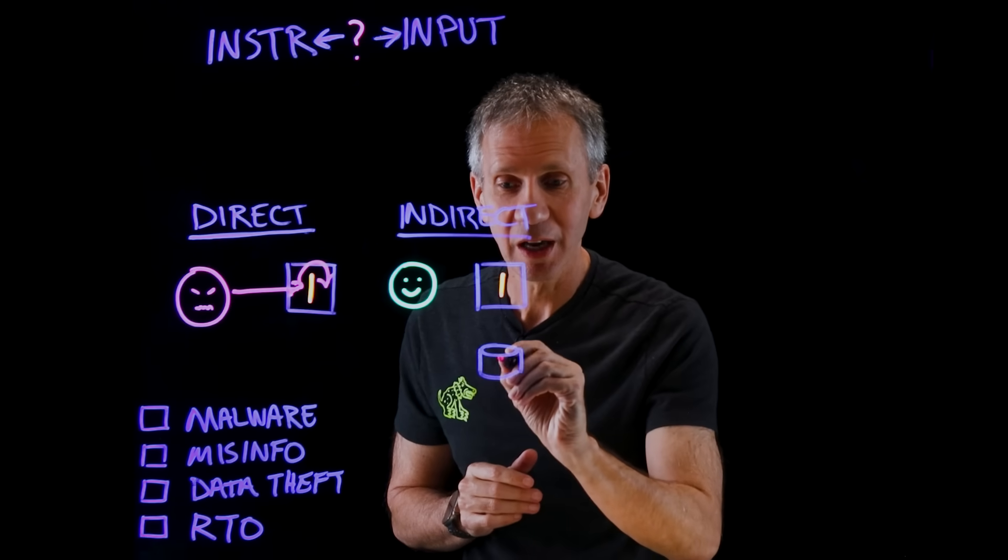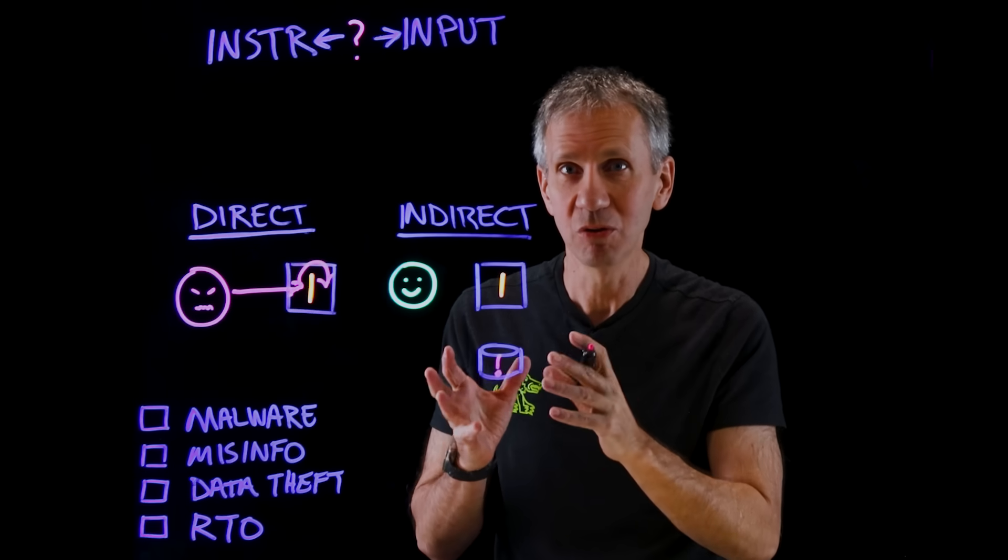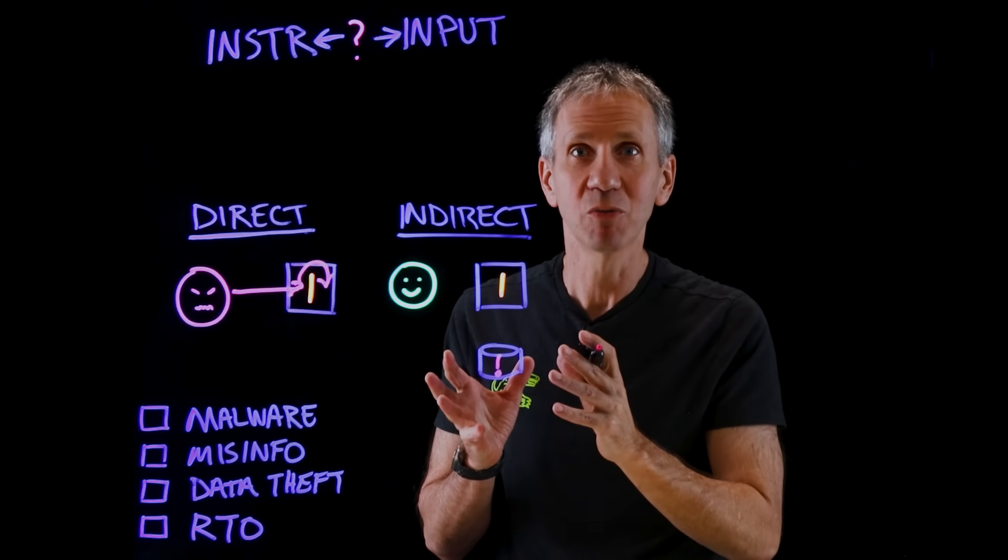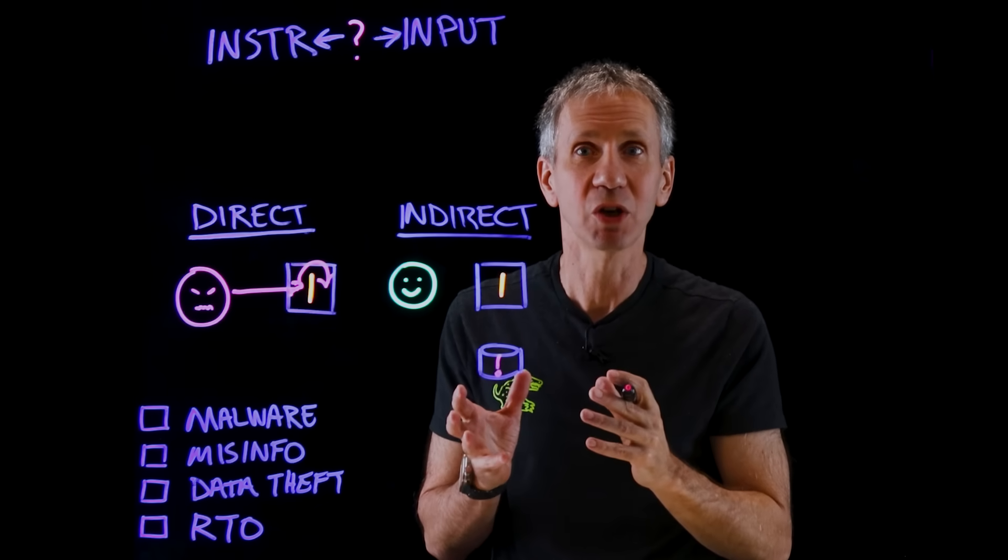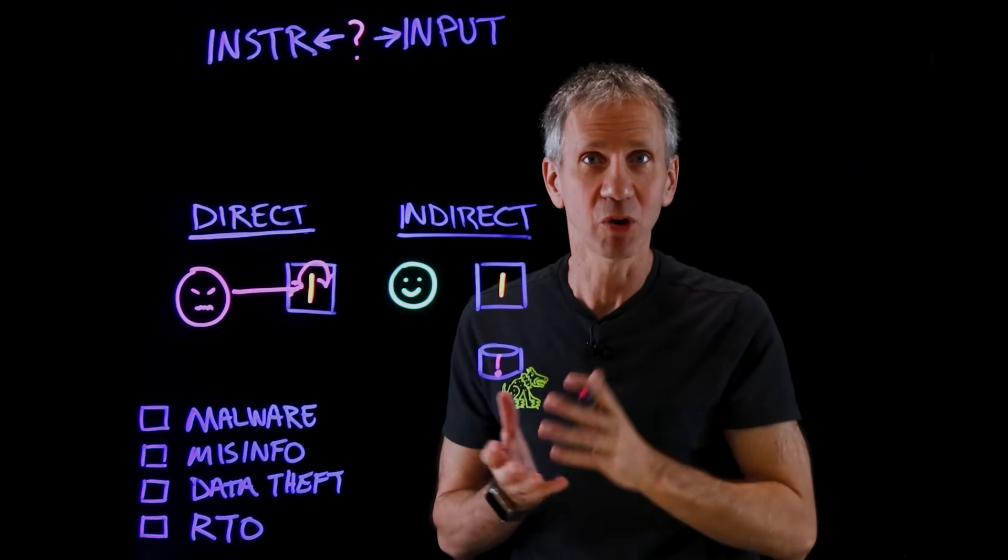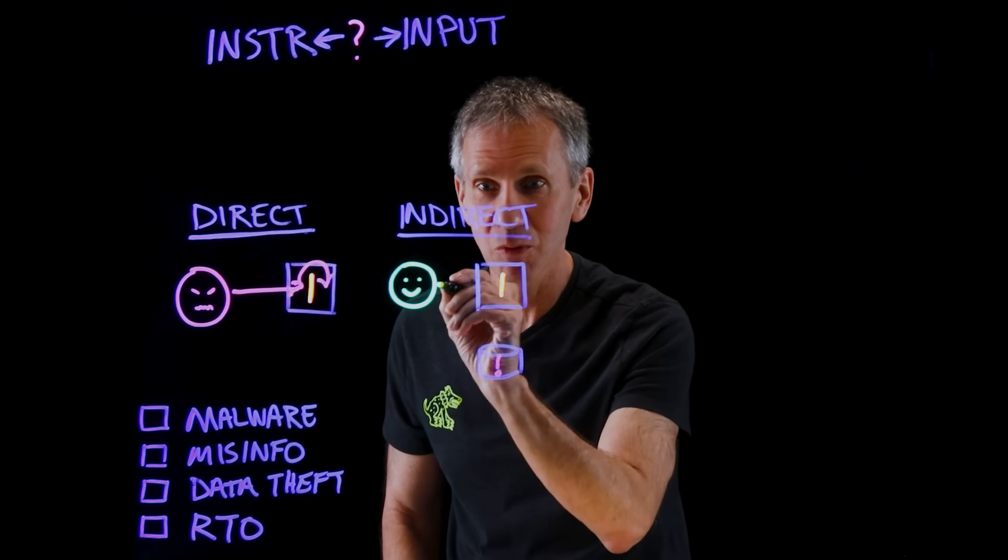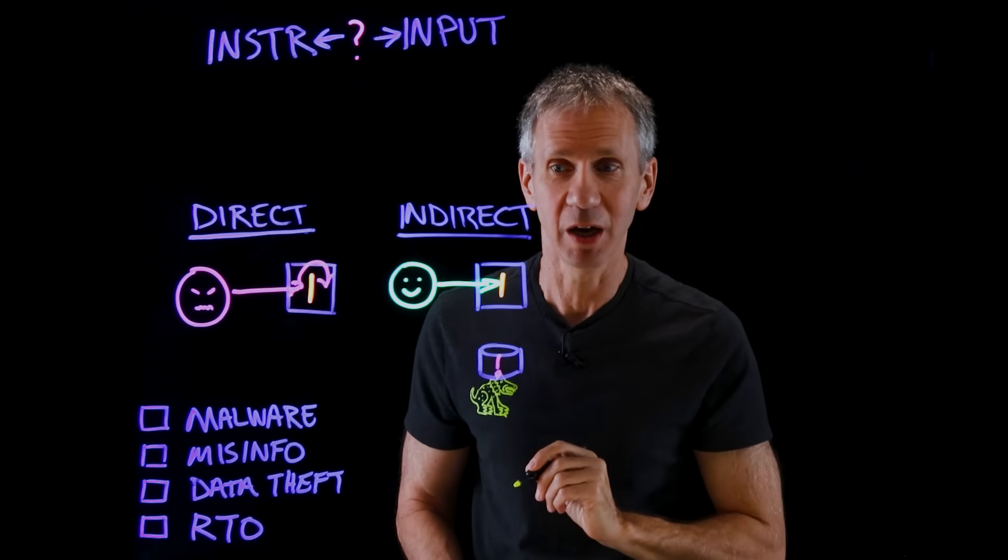How about another type? Let's say there is a source of data. Maybe it's used to tune or train a model, or maybe we're doing something like retrieval augmented generation, where we go off and pull in information in real time when the prompt comes in. Now, we have an unsuspecting user who's coming in with their request into the chatbot.